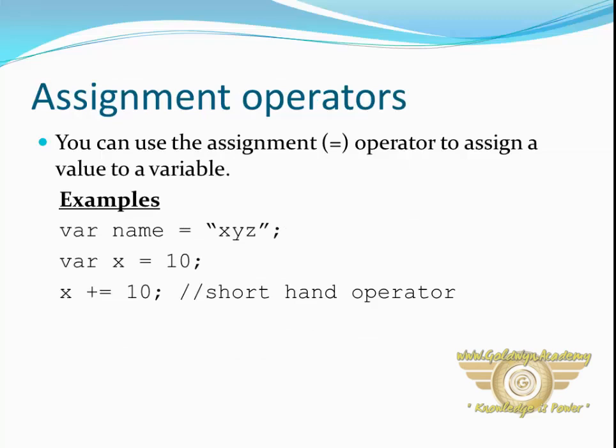Assignment operators: you can use assignment operators to assign a value to a variable. Example: name = x, y, z. Variable x = 10. We can also use shorthand operators. Example: x += 10, which means x = x + 10.